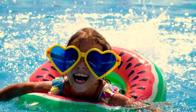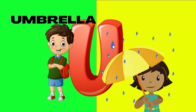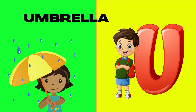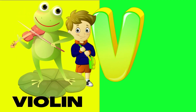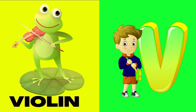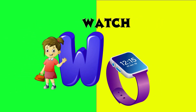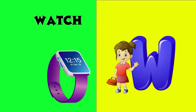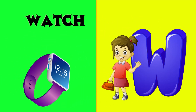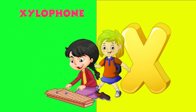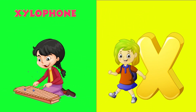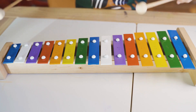U is for umbrella, u-u-umbrella. V is for violin, v-v-violin. W is for watch, w-w-watch. X is for xylophone, x-x-xylophone.